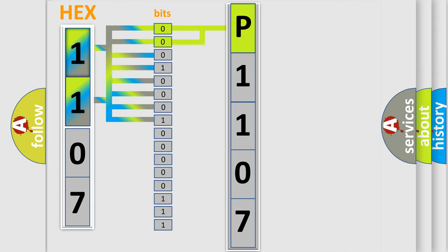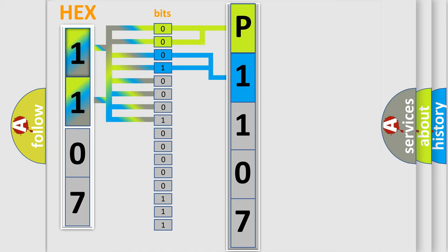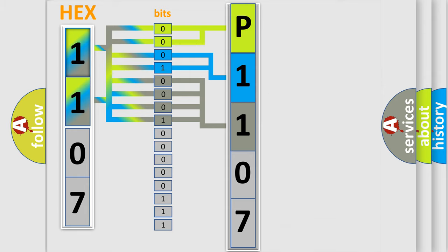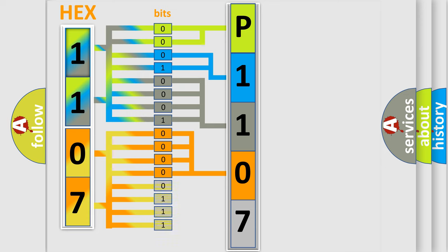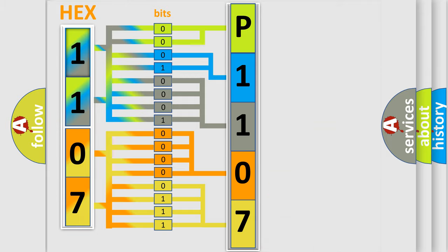The next two bits determine the second character. The last bits of the first byte define the third character of the code. The second byte is composed of a combination of eight bits. The first four bits determine the fourth character of the code, and the combination of the last four bits defines the fifth character. A single byte conceals 256 possible combinations.